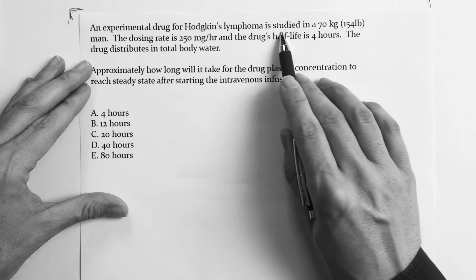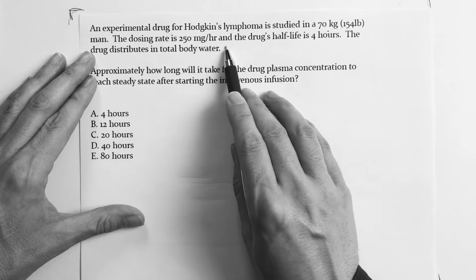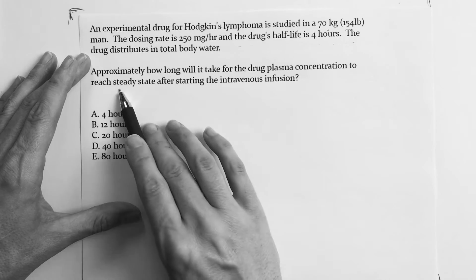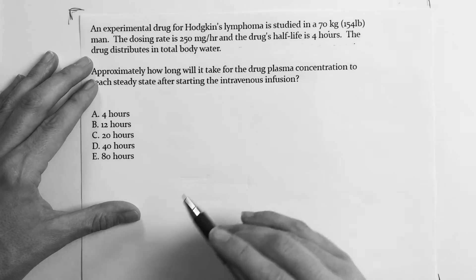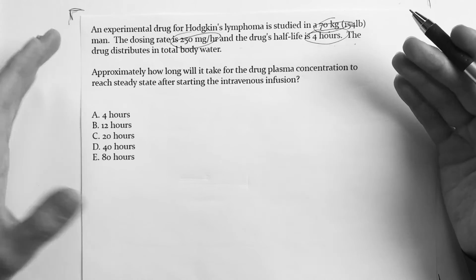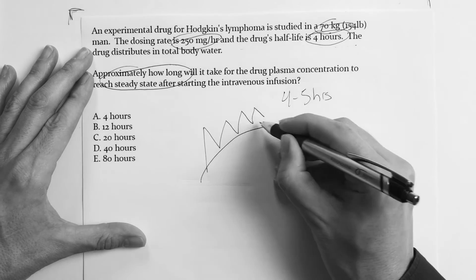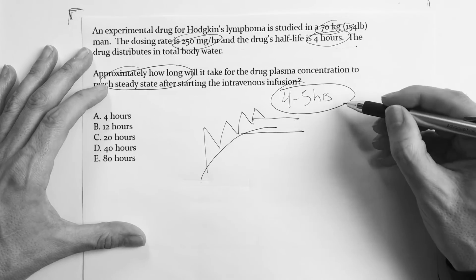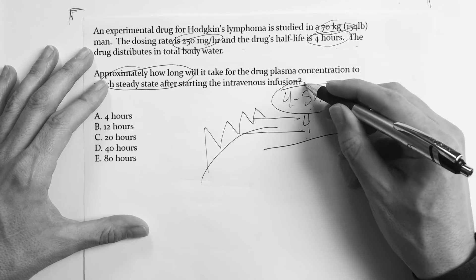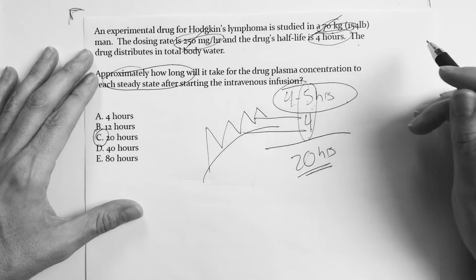This one says: an experimental drug for Hodgkin's lymphoma is studied in a 70-kilogram man. The dosing rate is 250 milligrams per hour, and the drug's half-life is four hours. The drug distributes in total body water. Approximately how long will it take for the drug plasma concentration to reach steady state after starting IV infusion? You're tempted to use all those numbers, but all you really need is: how long does it take to reach steady state? Four to five half-lives. The half-life is four hours — so four to five times four equals 16 to 20 hours. Answer choice C, 20 hours. Everything else was smoke and mirrors.